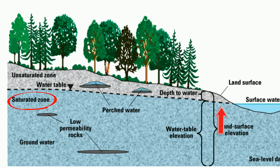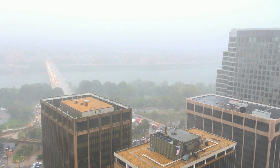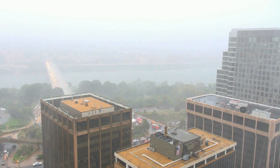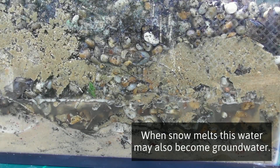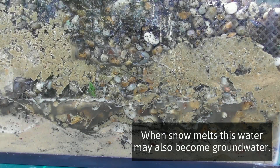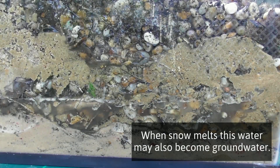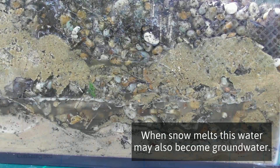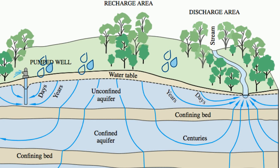The rocks and minerals above the saturation zone may be dry and is called the unsaturated zone. So how does this water end up in the ground? When it rains, some of the water moves down into the ground. If this water moves deep enough, it can stay there for a long time, like thousands of years.